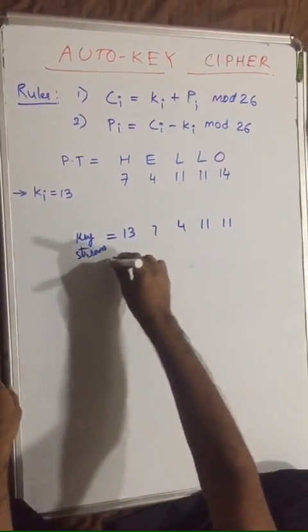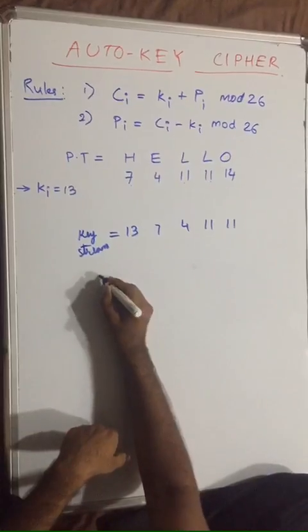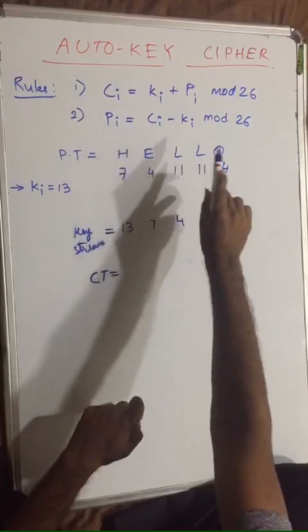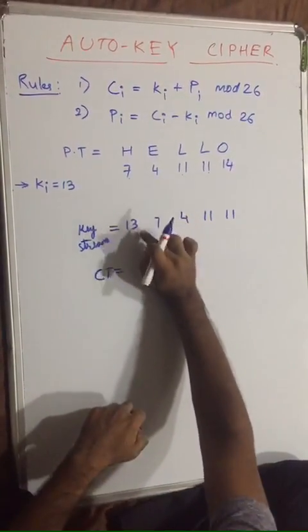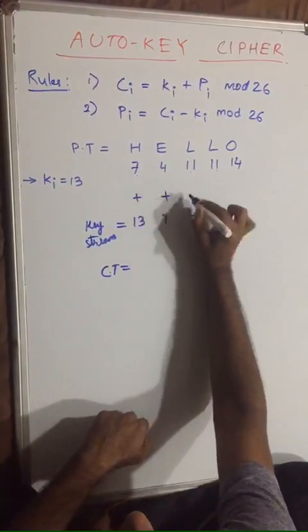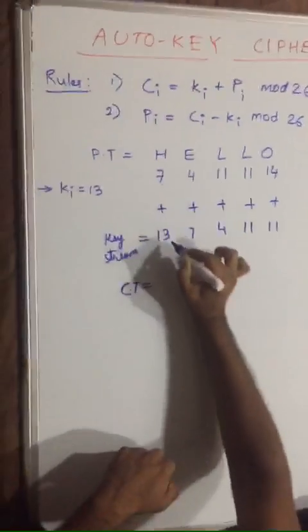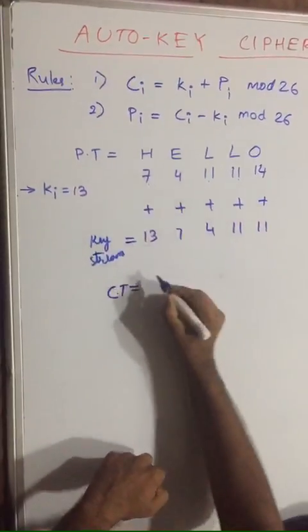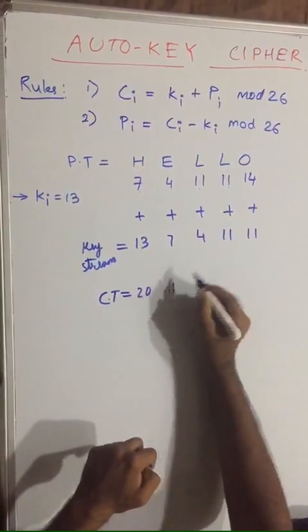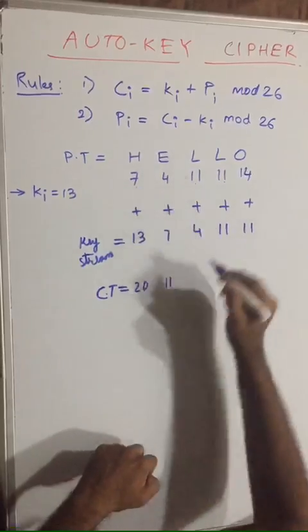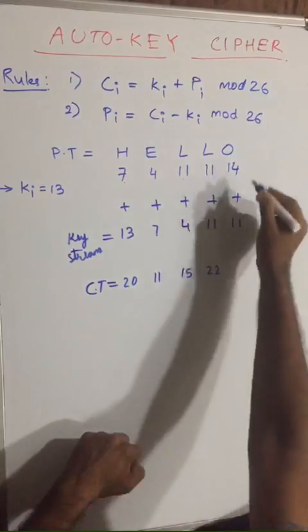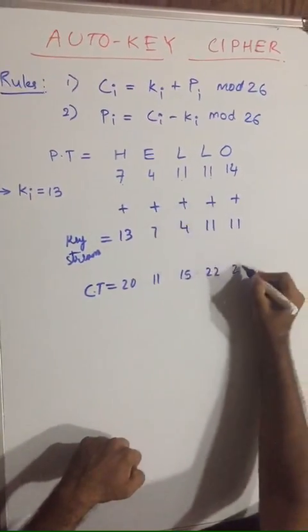To gain our ciphertext we would be using our key stream. The formula for ciphertext is ki + Pi mod 26. We would be adding all of these terms: 7 + 13 = 20 mod 26 is 20. 7 + 4 = 11 mod 26 is 11. 11 + 4 = 15 mod 26 is 15. 11 + 11 = 22 mod 26 is 22. 11 + 14 = 25 mod 26 is again 25.